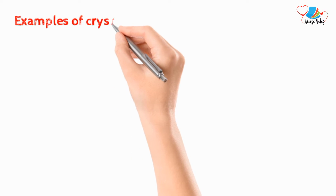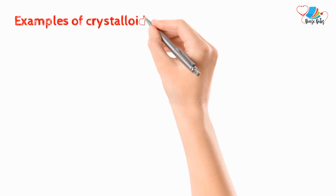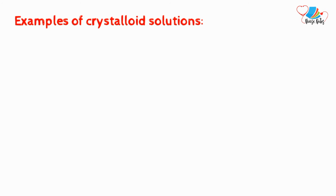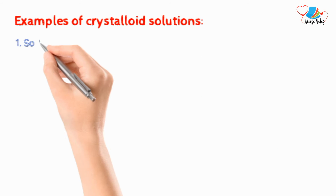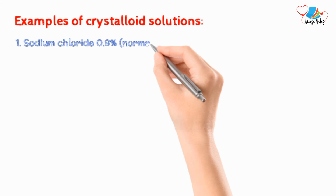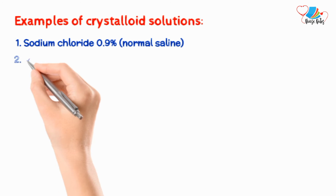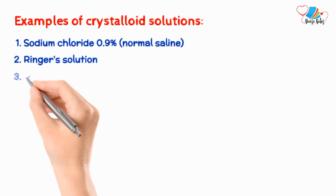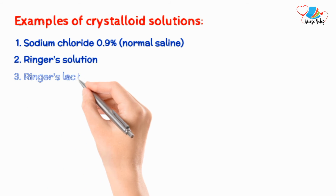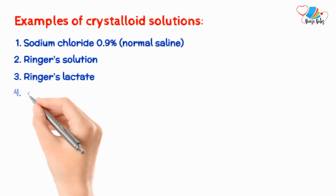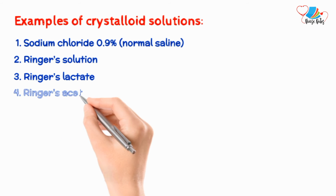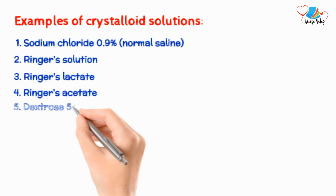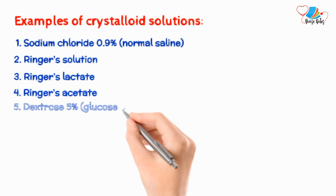Some examples of crystalloid solutions include: 0.9% sodium chloride, commonly known as normal saline; Ringer's solution; Ringer's lactate; Ringer's acetate; and 5% dextrose solution.